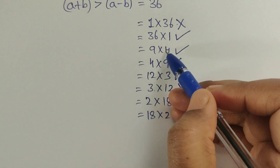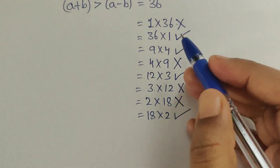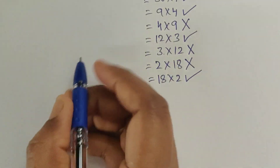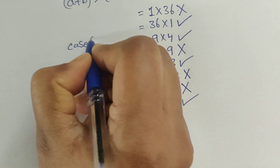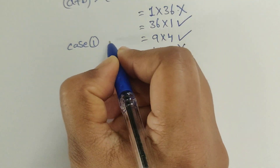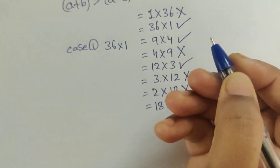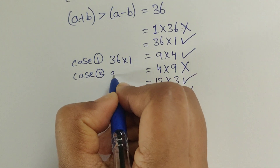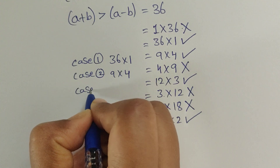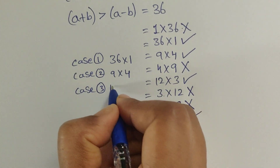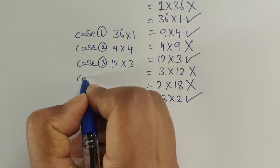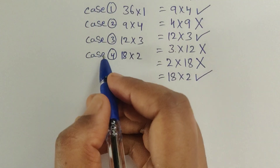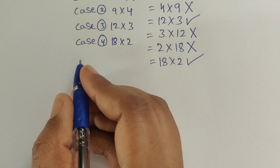We have 4 factor pairs that satisfy the condition. Case 1: 36×1. Case 2: 9×4. Case 3: 12×3. Case 4: 18×2.